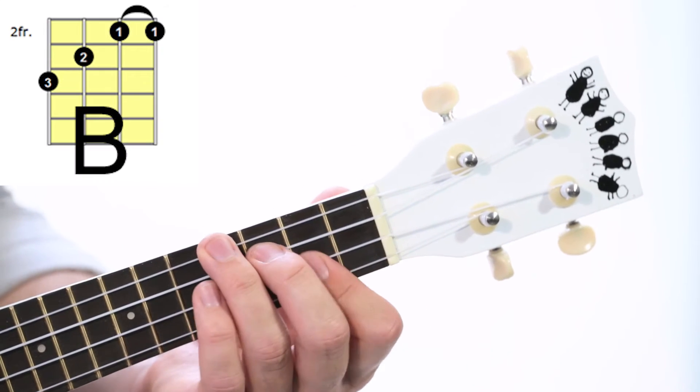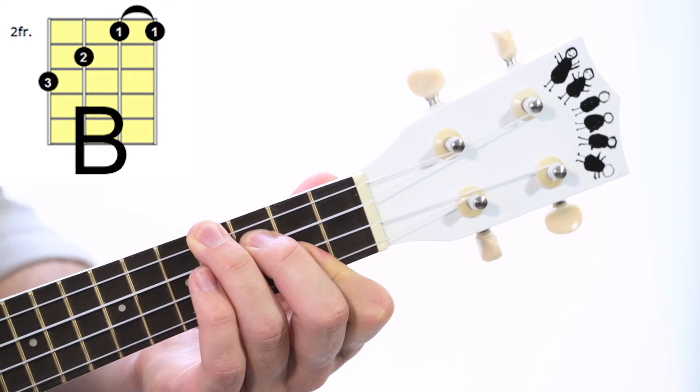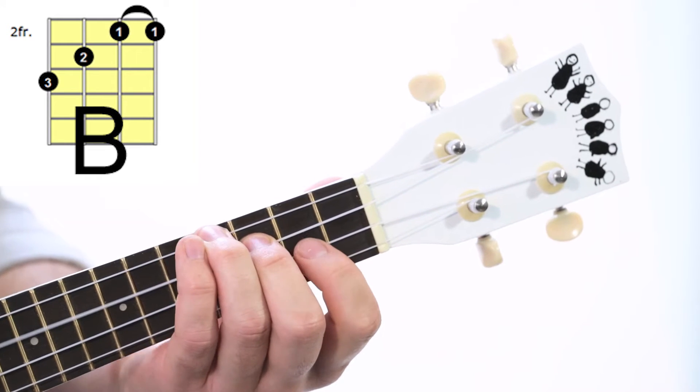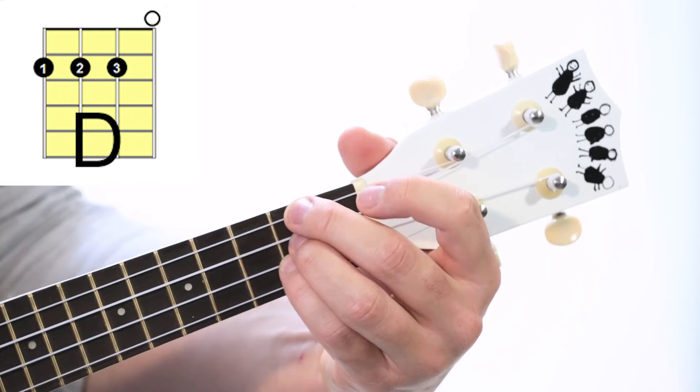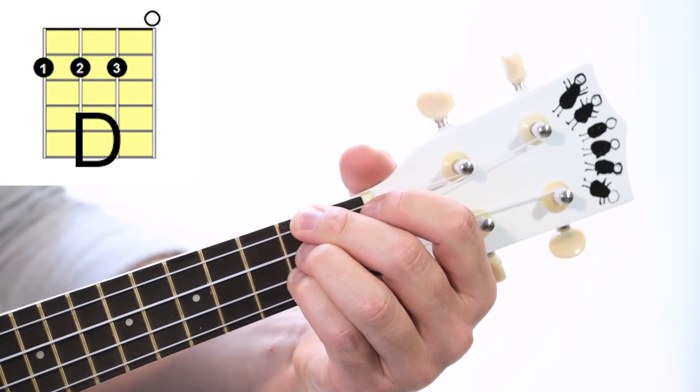Then we're going up to the chord B. So that's third finger, second finger, first and first. And then we're going to be playing D. And then up to E.